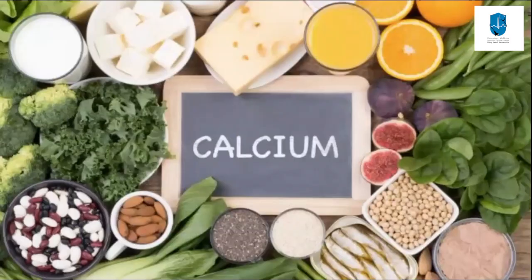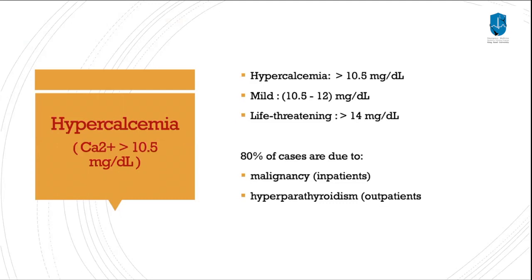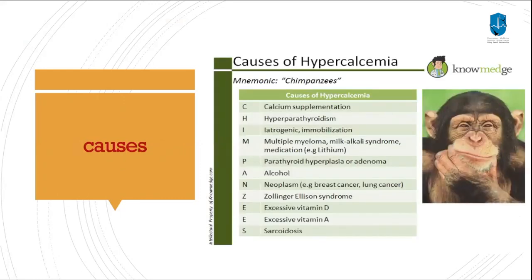Now let's move on to calcium. Hypercalcemia is defined as a calcium level more than 10.5, and we can classify it into mild and life-threatening. Eighty percent of cases are due to malignancy or hyperparathyroidism. Causes include parathyroid hyperplasia, adenoma, multiple myeloma, cancer, calcium supplementation, and it can also be seen in alcoholism.